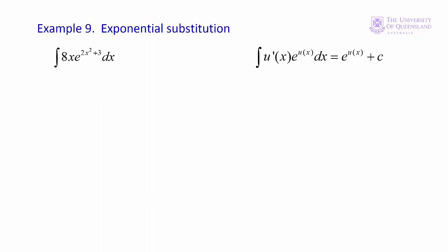In the case of exponential substitution, we have a product as our integrand. One term in the product is e to some function of x; the other term is the first derivative of the exponent. In that case, our indefinite integral is e to the u plus c. It looks quite simple, but we still need to take care. The exponent in this example is 2x squared plus 3, so we let u equal 2x squared plus 3. That implies du equals 4x dx.